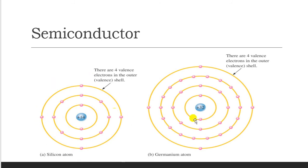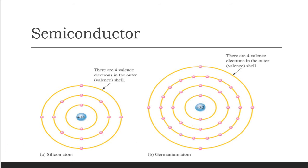Silicon has 4 electrons in its outermost shell. Germanium has atomic number 32 with configuration 2, 8, 18, 4 — also 4 electrons in the outermost shell. Having 4 valence electrons makes it easy to donate and receive electrons from other atoms, which is why both silicon and germanium act as semiconductors.